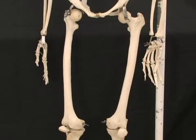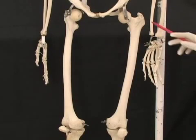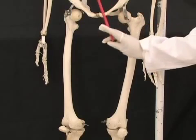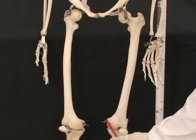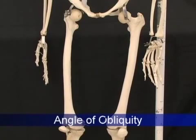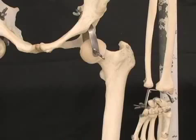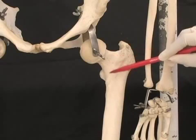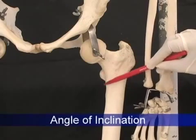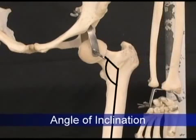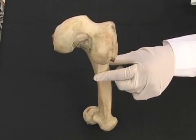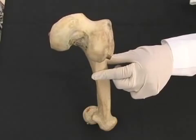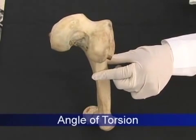There are three important angles associated with the femur. The femoral shaft lies more lateral at its proximal end and more medial at its distal end — this angle is called the angle of obliquity. The angle between the neck and the shaft is the angle of inclination. The angle between the long axis of the femoral neck and a line drawn through the centers of the distal condyles is called the angle of torsion, or anteversion.